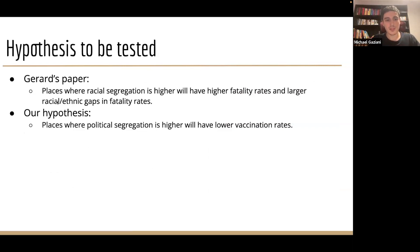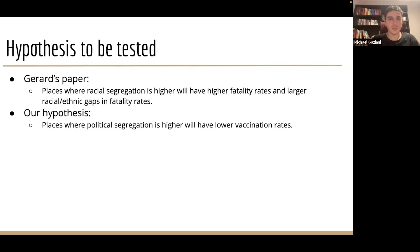Our hypothesis was that we believe neighborhoods and counties with higher political segregation would have lower vaccination rates. This was mainly under the assumption that our social circles mostly contain people who think similarly to us. Given that it was a time of the pandemic where we were socially isolated, we weren't encountering people with different political views — so someone more skeptical of public health guidelines would maybe be less likely to abide by them.